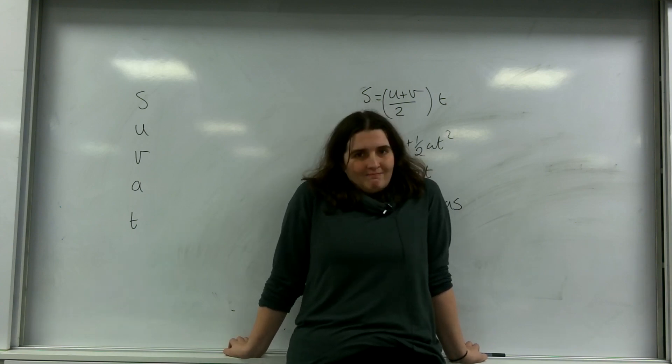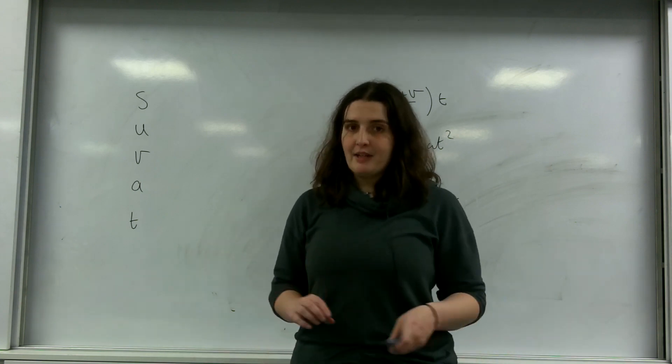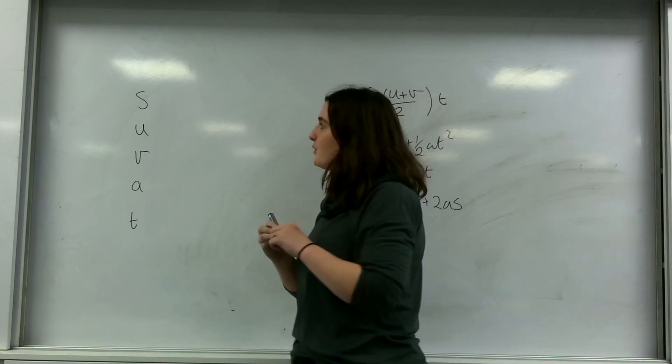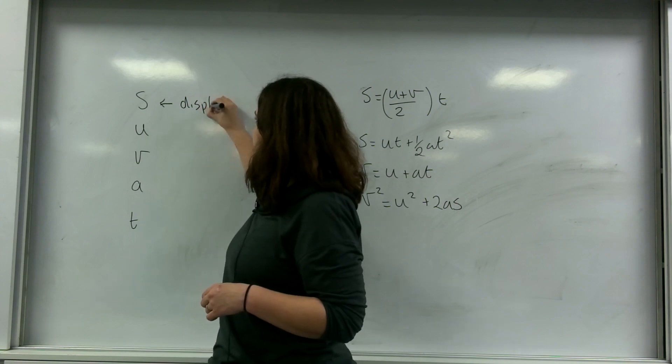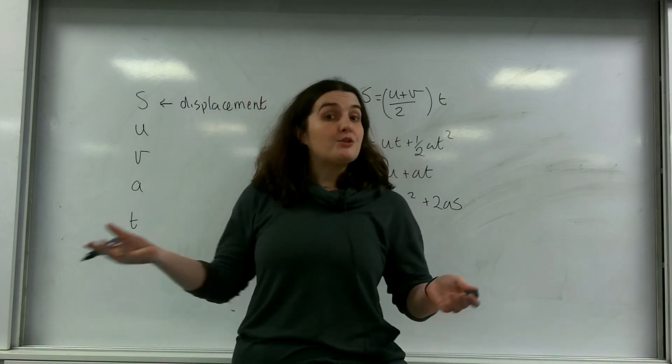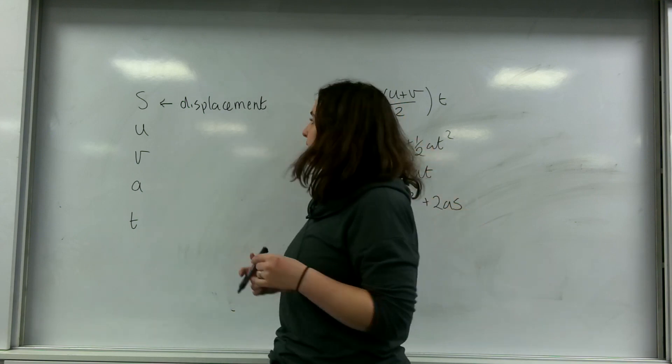Now, SUVAT, as it's more traditionally known, is an acronym. S stands for displacement. We tend to use D to represent distance, which is a scalar quantity, while displacement is a vector quantity.